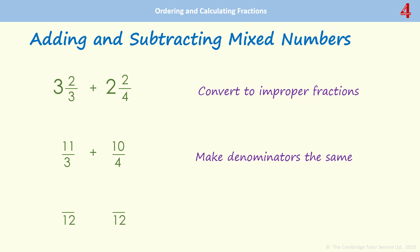To get from 3 to 12 we multiply by 4, so we multiply the numerator by 4, and that's 44. To get from 4 to 12 we multiply by 3, so we do the same with the 10 numerator, and that's 30. Now we're adding the twelfths together. 44 add 30 is 74. We have 74 twelfths.